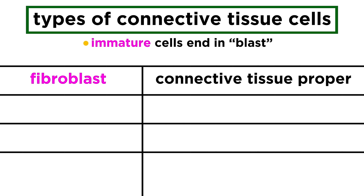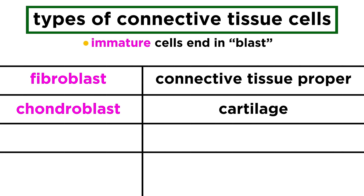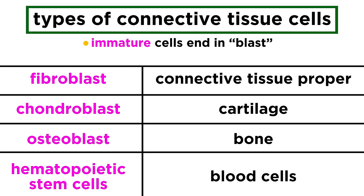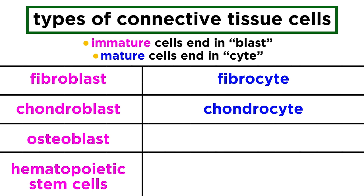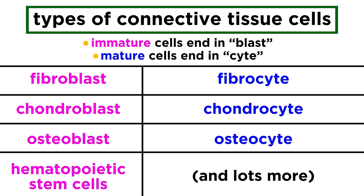Connective tissue proper forms from fibroblasts. Cartilage comes from chondroblasts. Bones from osteoblasts. Blood cells come from hematopoietic stem cells, but as this is a different process, we will examine this when we take a closer look at the bloodstream. Once mature, the suffix -blast becomes -cyte, leaving us with fibrocytes, chondrocytes, and osteocytes, among other types as well, such as fat cells and some others we will discuss later.